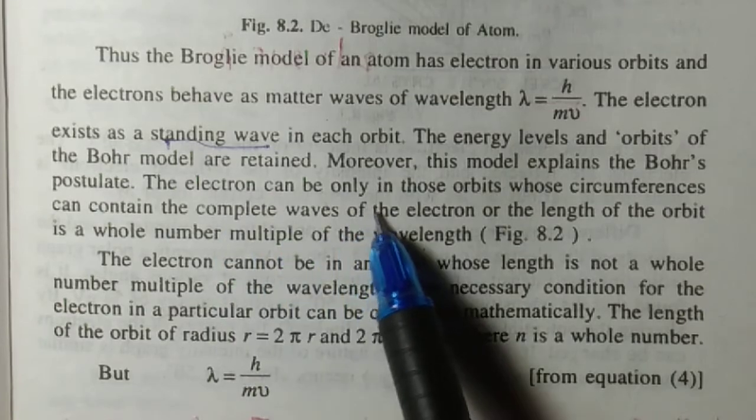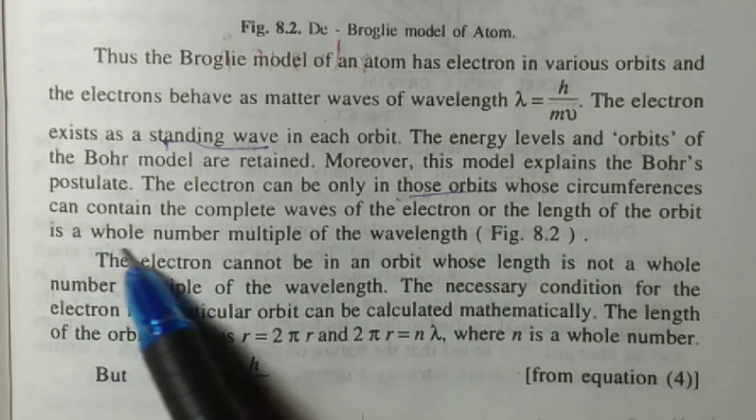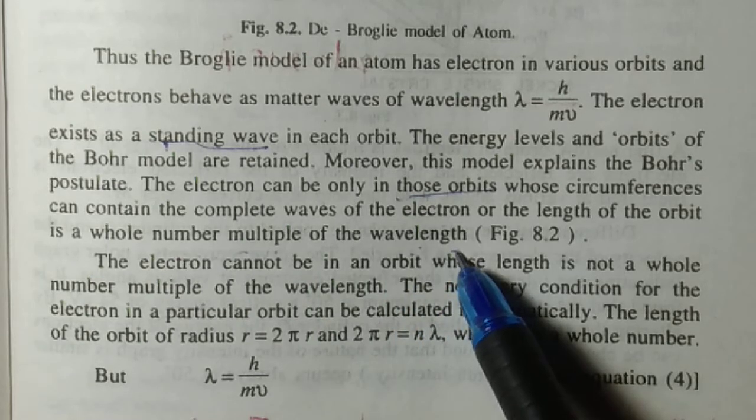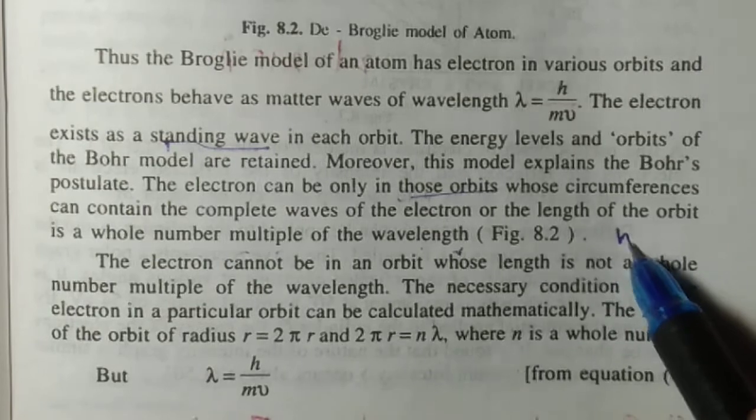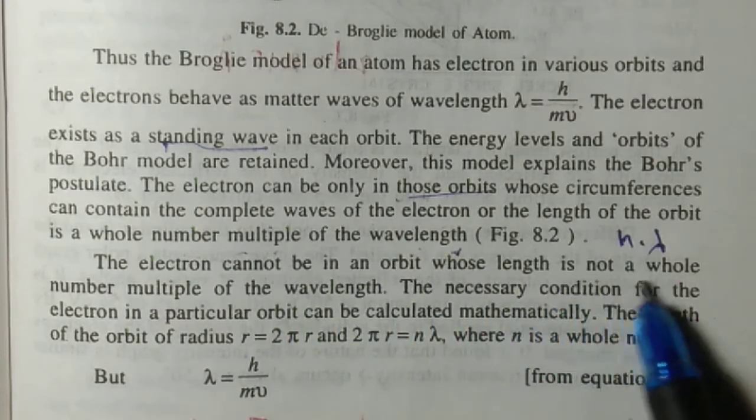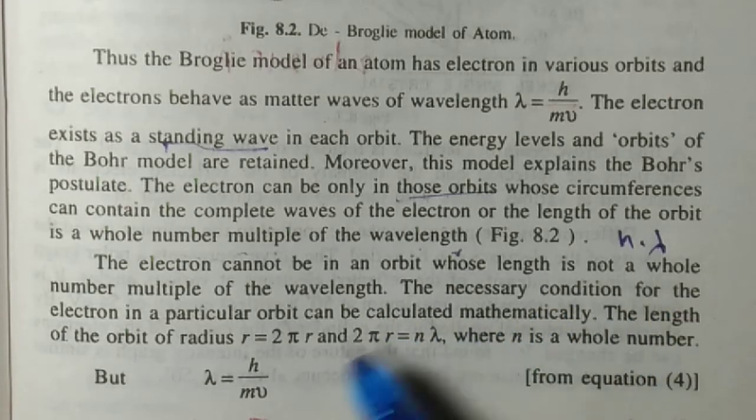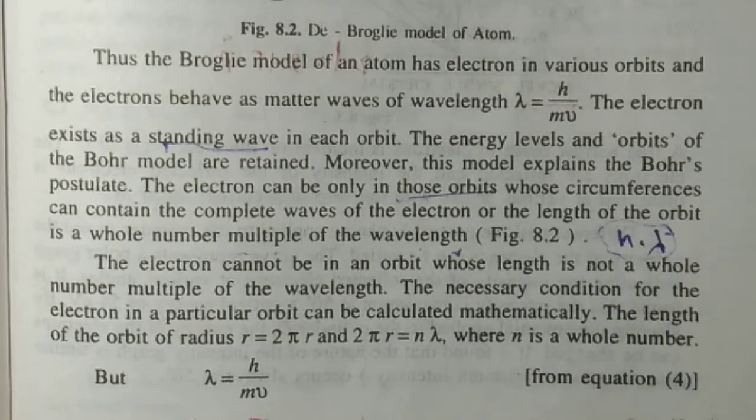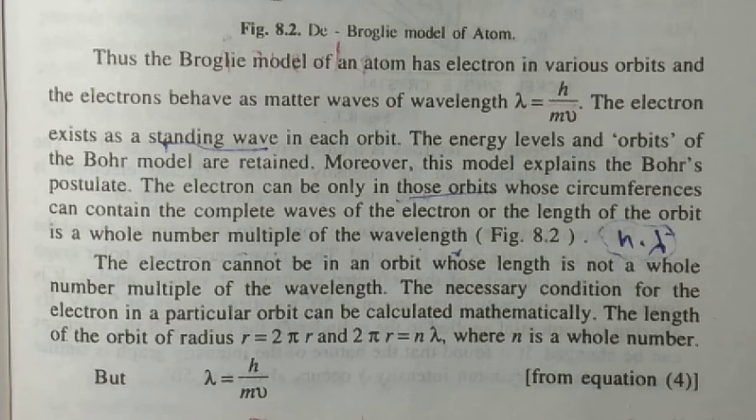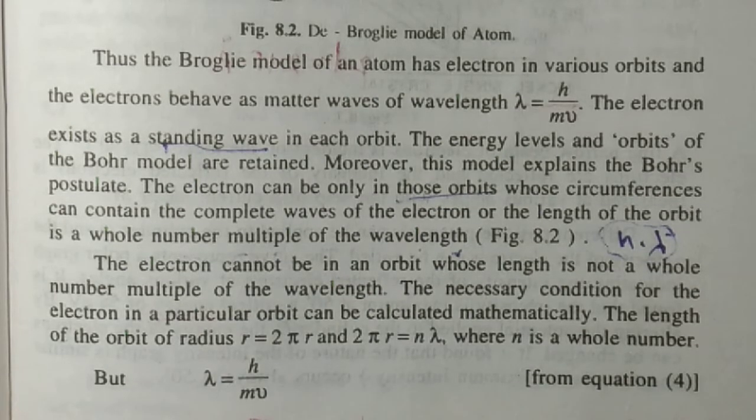The electron can only be in those orbits whose circumference can contain the complete wave of the electron, or the length of the orbit is a whole number multiple of wavelength, that is nλ. The electron cannot be in an orbit whose length is not a whole number multiple of wavelength. The length of any orbit is 2πr = nλ.